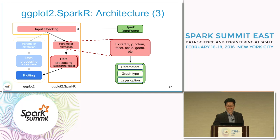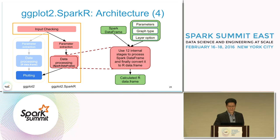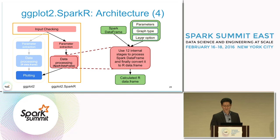But when a Spark data frame is the input, the parameter extraction in ggplot2.sparkr extracts the input-related parameters, graph type, and layer options, and they are passed to the data processing stage.